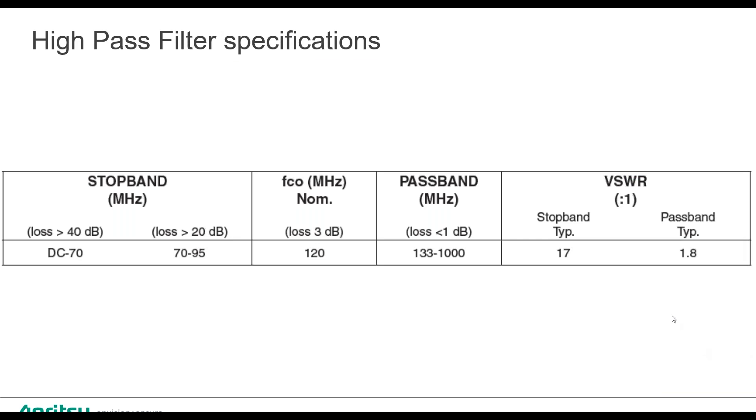High-pass filters. For this one, we can see that it is going to give us loss from DC to 70 megahertz. In that 70 to 95 megahertz, we'll have a loss of approximately 20 dB. Our frequency cutoff, 3 dB point, is 120 megahertz. Our pass band is 133 to 1 gig. You'll notice we have VSWR specifications as well for the stop band and the pass band.